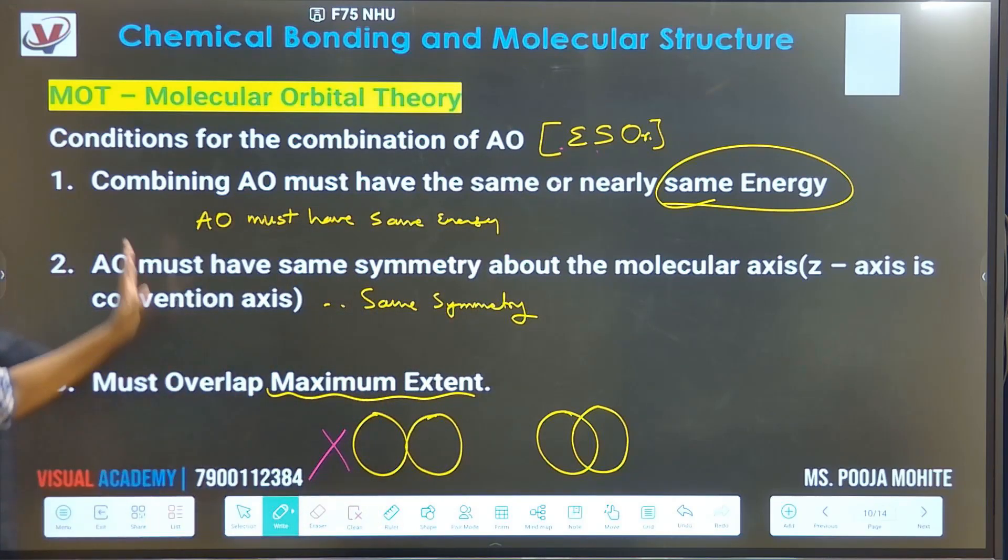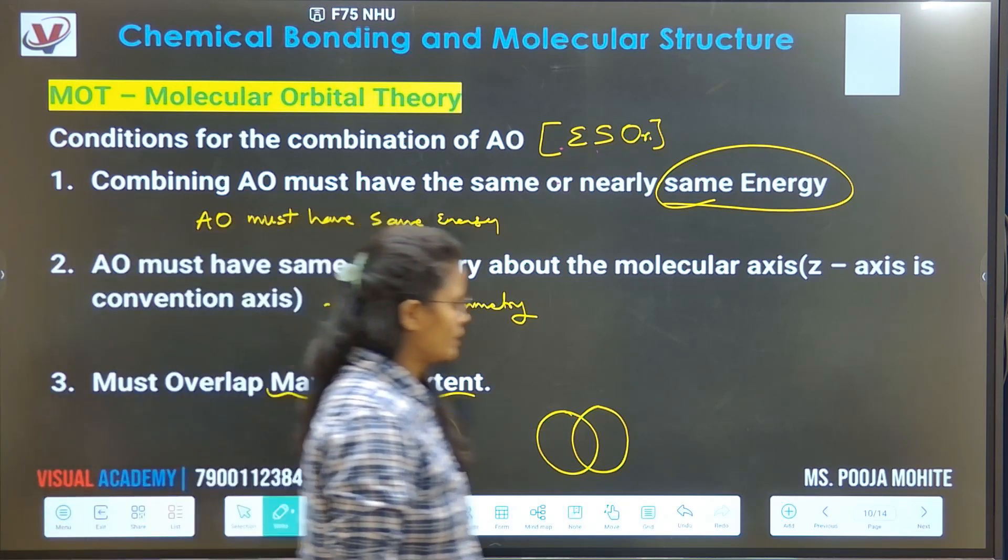This is the same thing we have studied. Then you can choose that orbital for the pairing of an electron. So remember this.